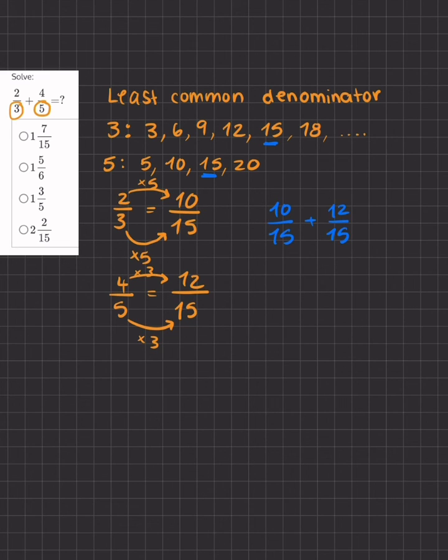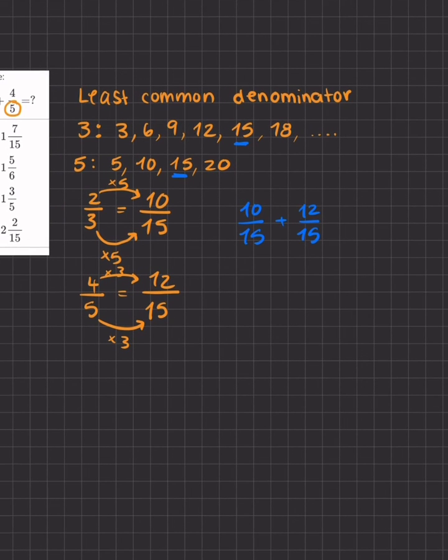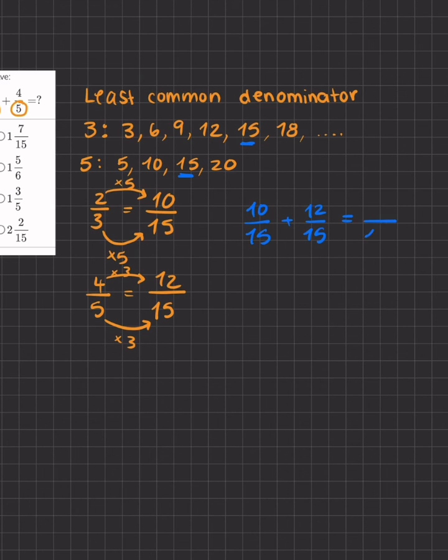Okay, I just rewrote these fractions to have a least common denominator. Now, once I have a least common denominator, all I have to do is add the numerators and keep the denominator the same. So I kept the denominator 15 the same, and I'm just adding now 10 and 12, giving me 22.